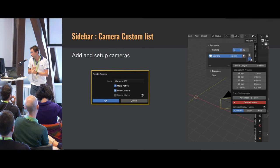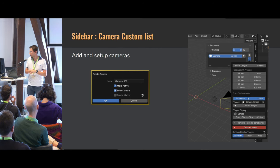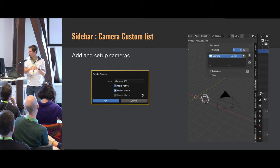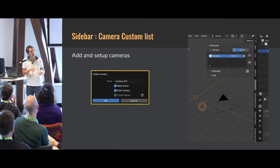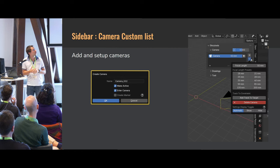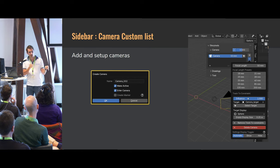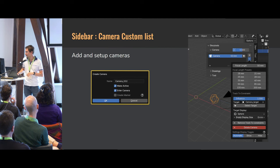For the camera section of the sidebar, you can manage your cameras, add cameras quickly at the current viewpoint, and add track-to constraints easily. For those who don't know the order of selection for parenting and constraints — you know the drill — the add-on handles that for you.